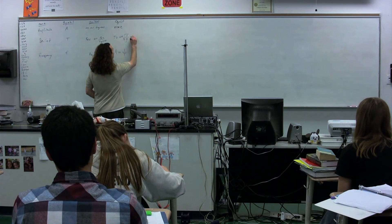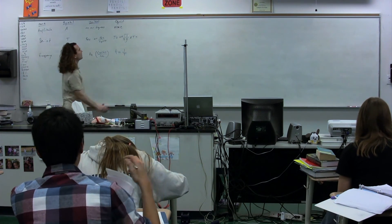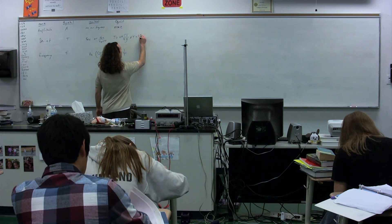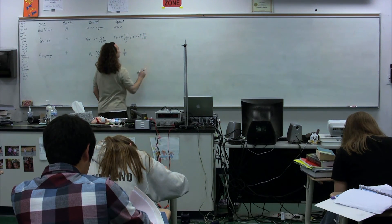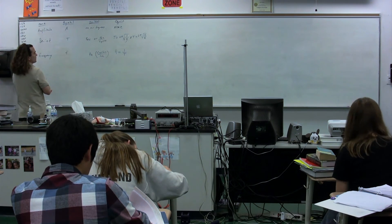We also have the period of a mass spring system which is equal to what? 2 pi square root of m over k. Square root of m over k. Good. That completes our new friends to add to the table of friends.